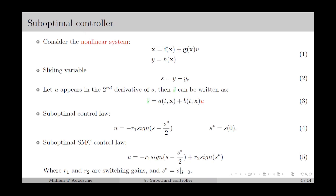In general, the suboptimal controller comes under the class of higher order sliding mode control approaches, and it is basically a second order sliding mode controller. The suboptimal controller can be applied to the nonlinear system as in equation number 1, and we consider the sliding variable as in equation number 2. In the case of second order SMC, the controller input u appears in the second derivative of the sliding variable s, and we can represent s-double-dot as in equation number 3, where a and b are some unknown functions of the state vector, which are assumed to be bounded.